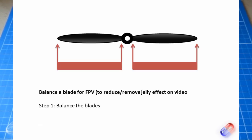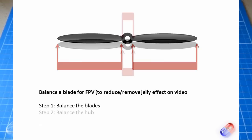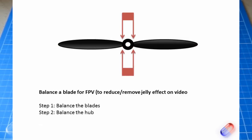The step that people miss out is the next step, which is once the blades are balanced, you also need to balance the hub.